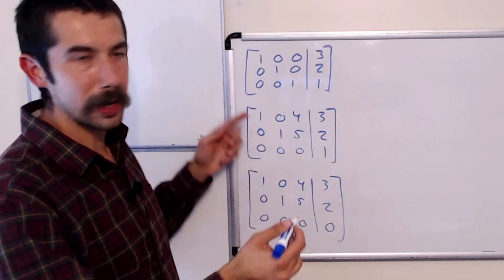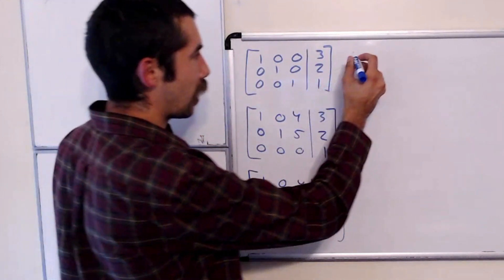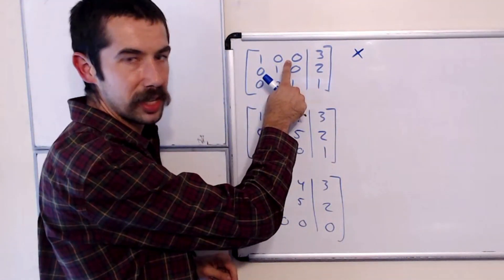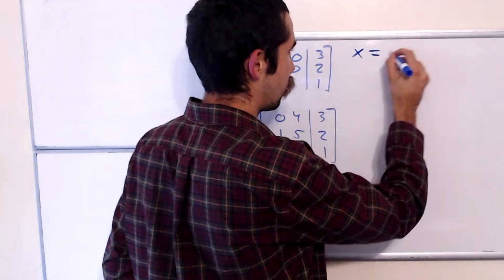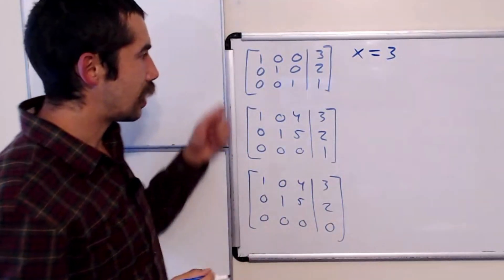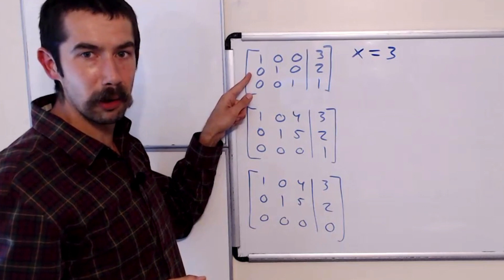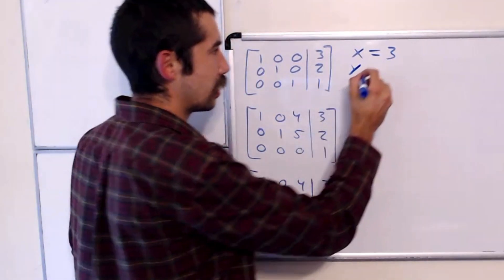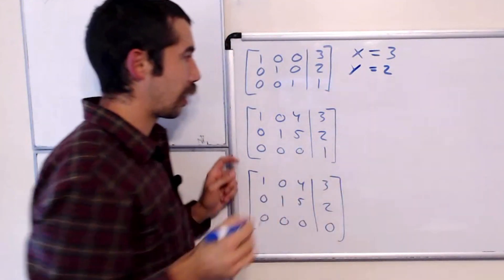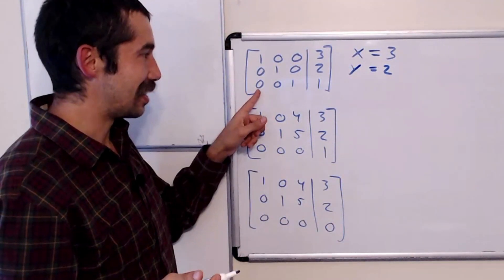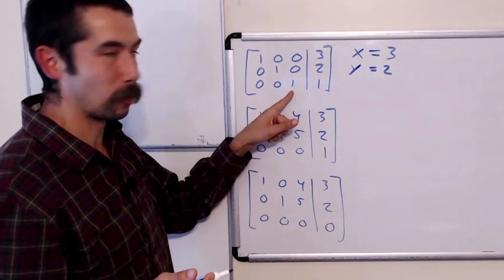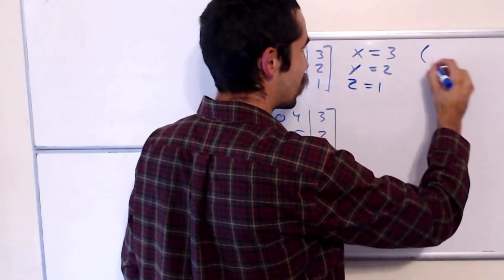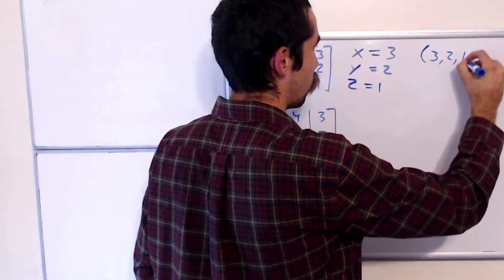Each row corresponds to an equation. This first row corresponds to x plus 0y plus 0z equals 3. The next row corresponds to 0x plus 1y plus 0z equals 2. You see this is not that bad. Then 0x plus 0y plus 1z equals 1. So our answer is the point 3, 2, 1.